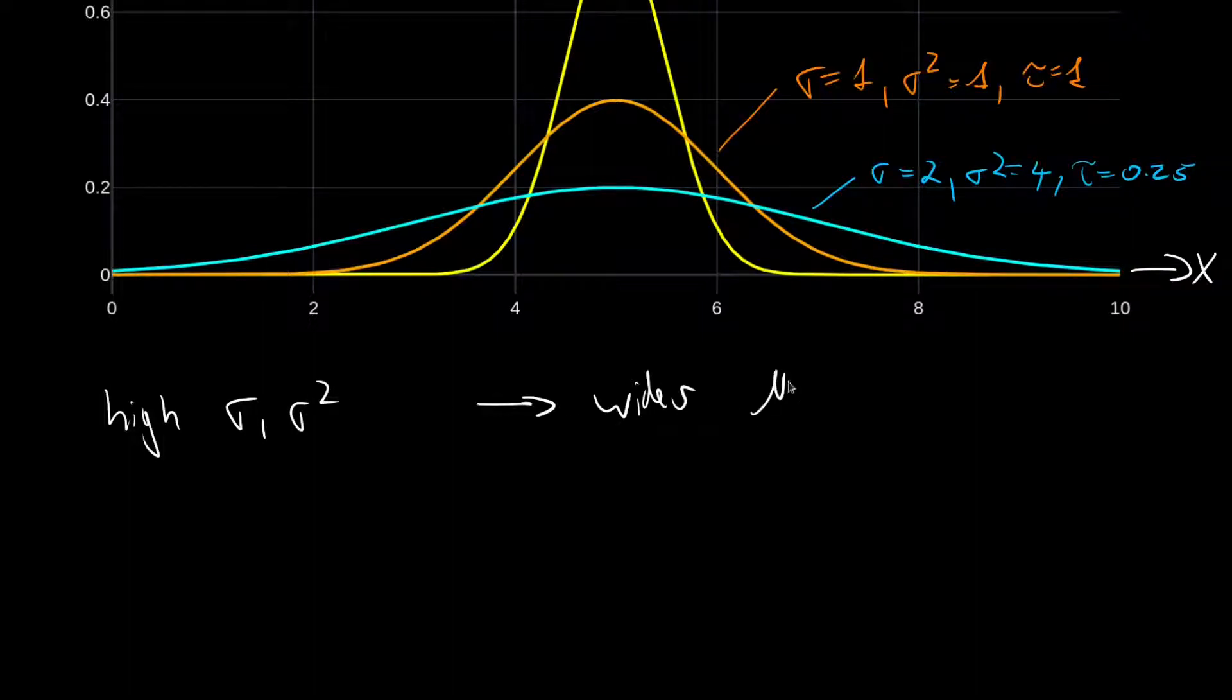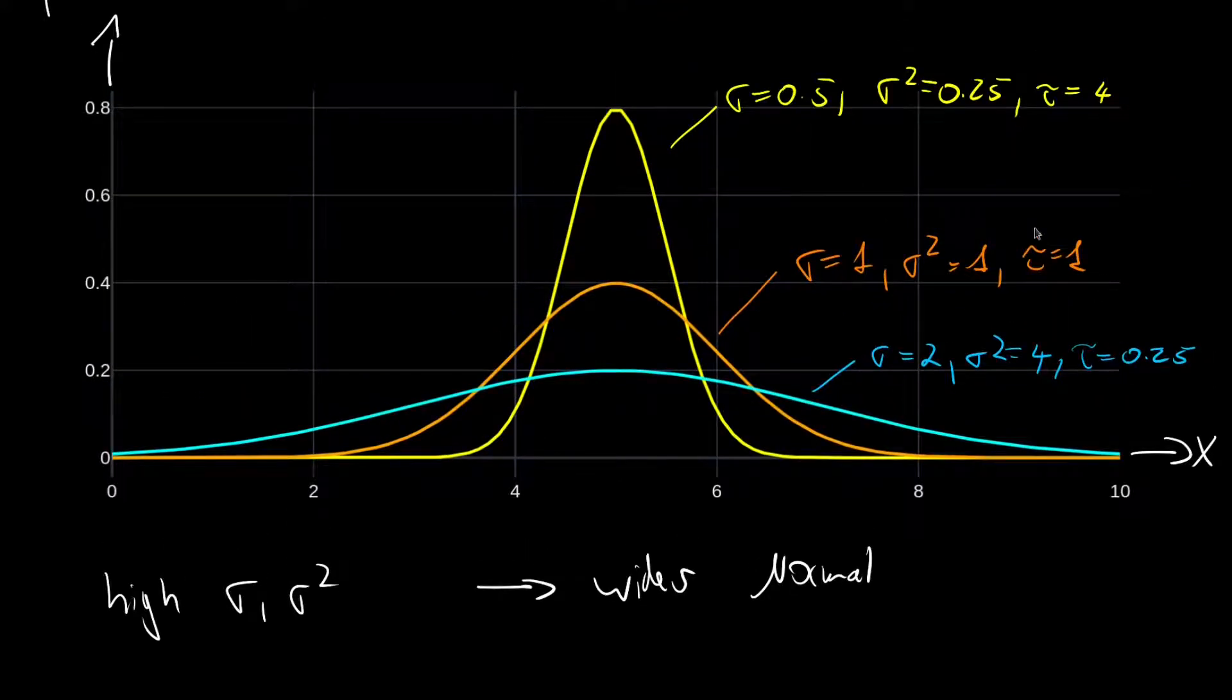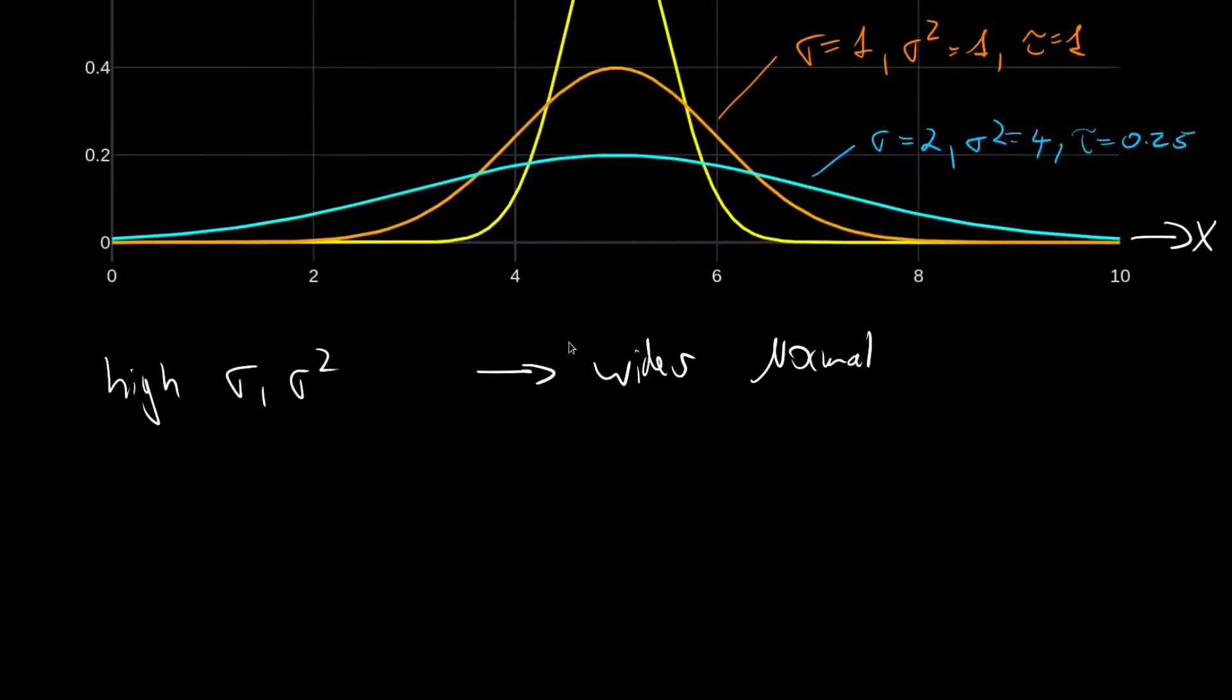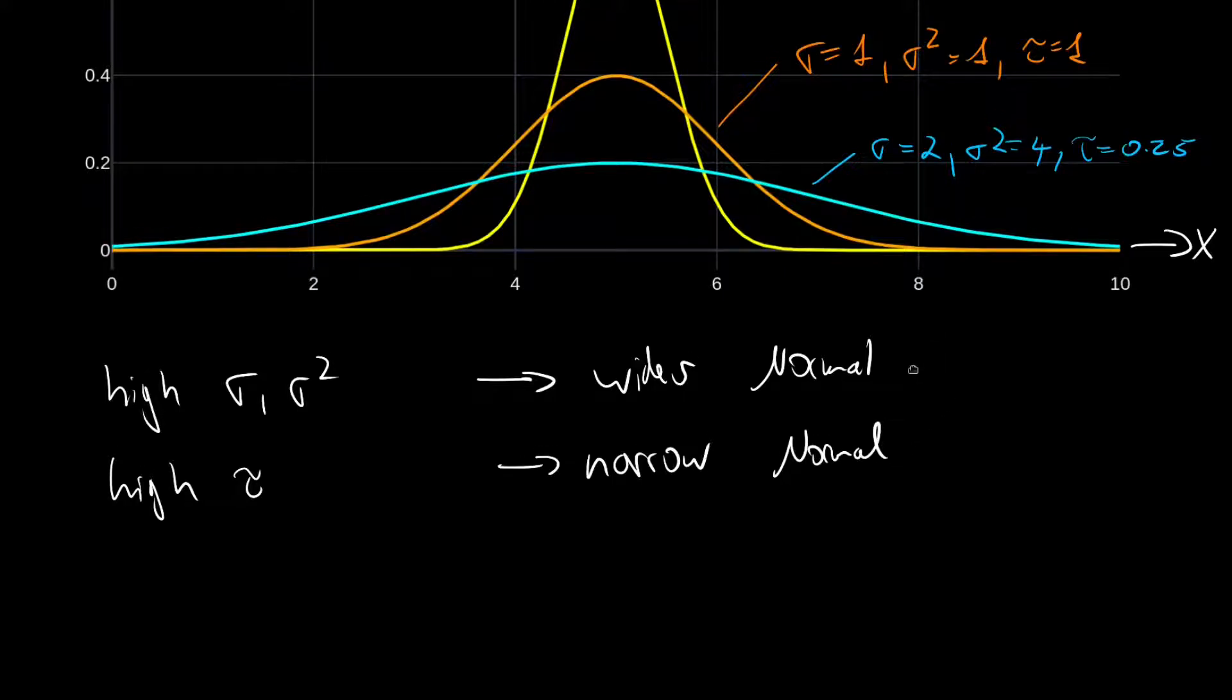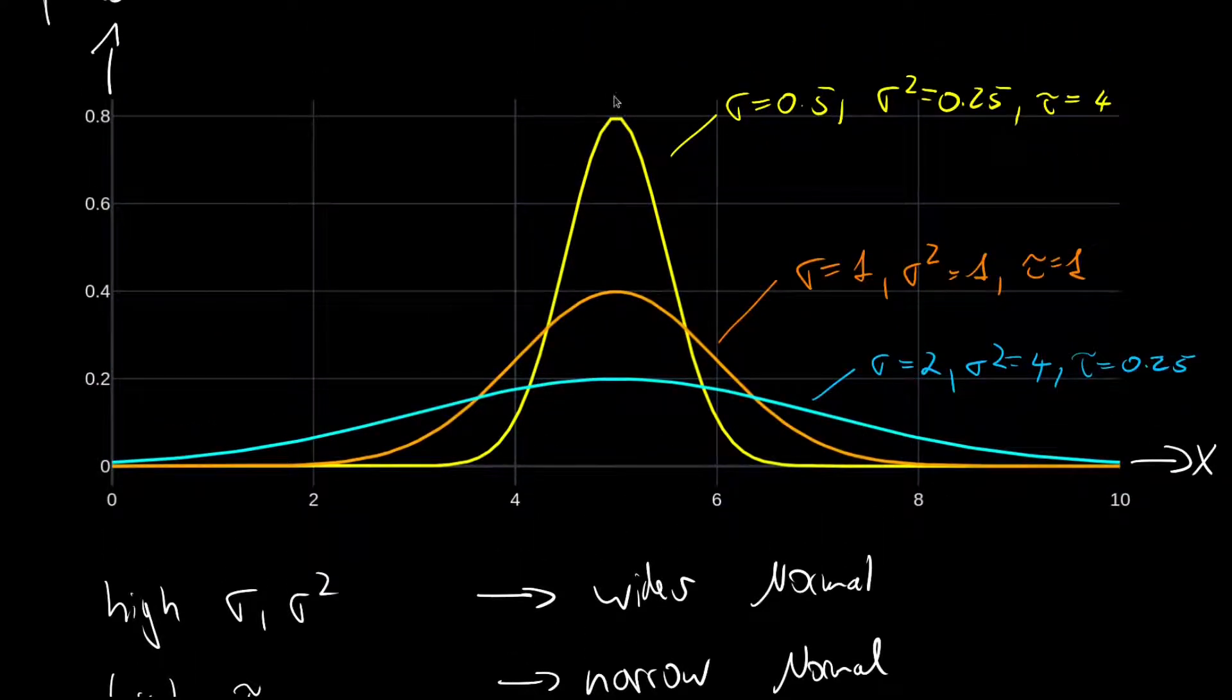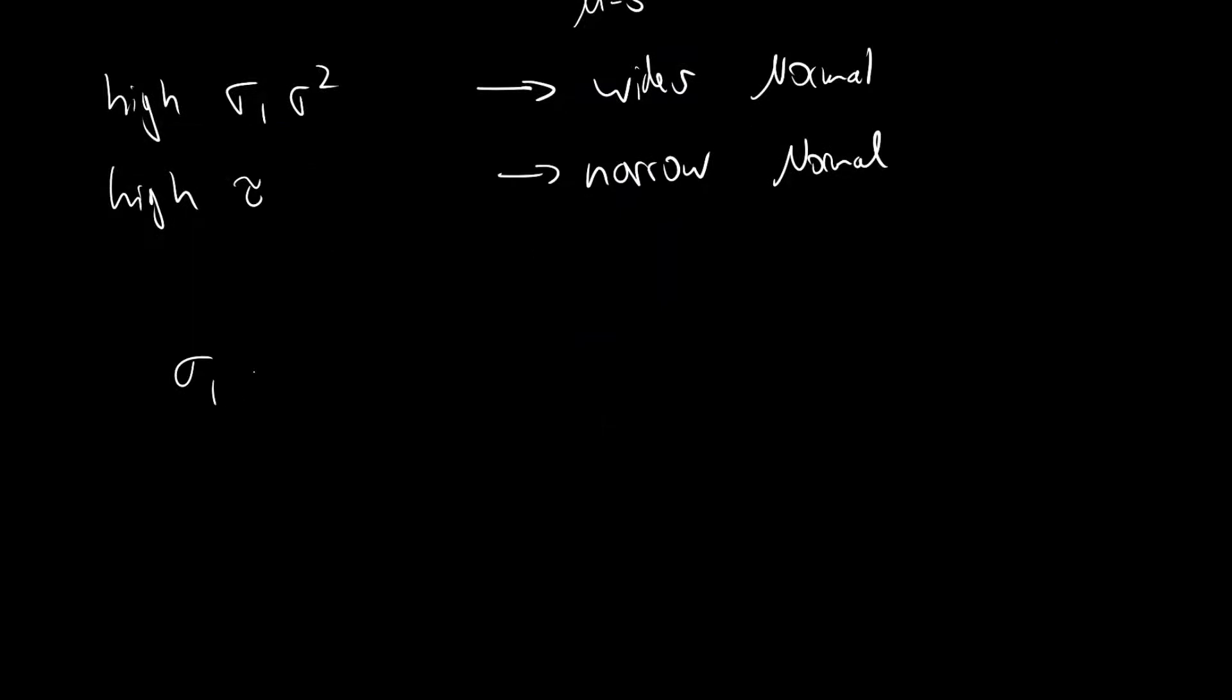And we see the higher the standard deviation or variance, the wider the normal. So high standard deviation or variance means a wider normal. And we see the higher the precision, the narrower the normal is. So a high precision tau means a narrow normal, and this makes sense because precision is associated with how close we are to the mean. The mean for all three distributions is the same, it is at 5. We also see that the precision, and consequentially also the standard deviation or variance, does not affect the mode or mean of the distribution. Sigma, sigma squared, and tau do not affect the mode, and in the case of the Gaussian, the mode is also the mean.